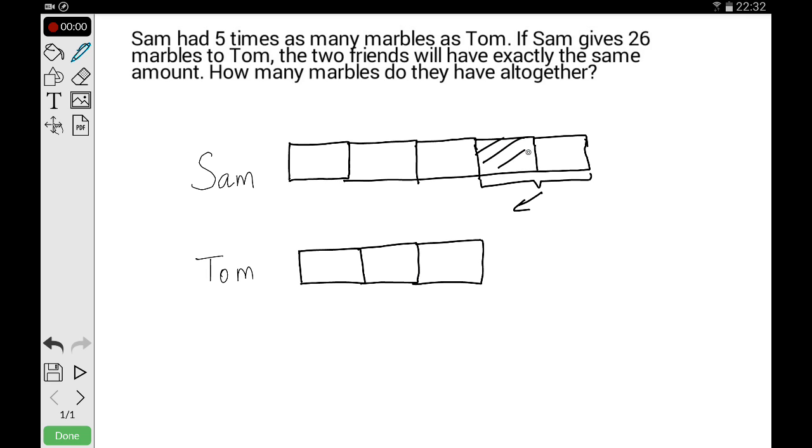And let's get rid of that. And therefore, what children will see is that this section, the two bars that Tom inherited now, must be equal to 26, and therefore each bar must be 13.